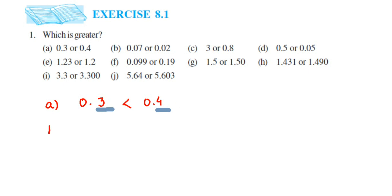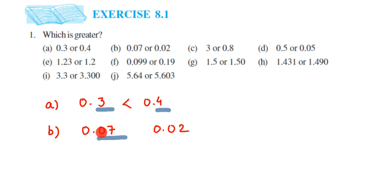The second question: 0.07 and 0.02. Again, both whole parts are zero. In the decimal part, the leftmost number after the decimal is zero in both cases, so we cannot compare them. We move to the next number: here we have 7 and here we have 2. Seven is greater, which means 0.07 is greater than 0.02.